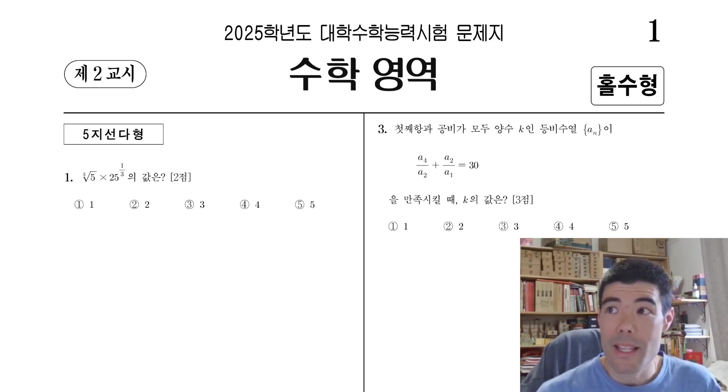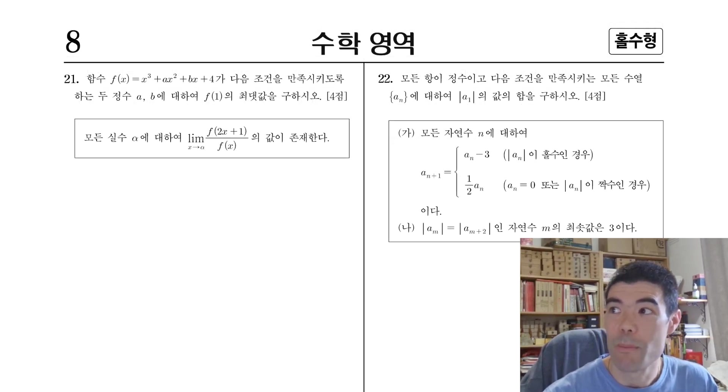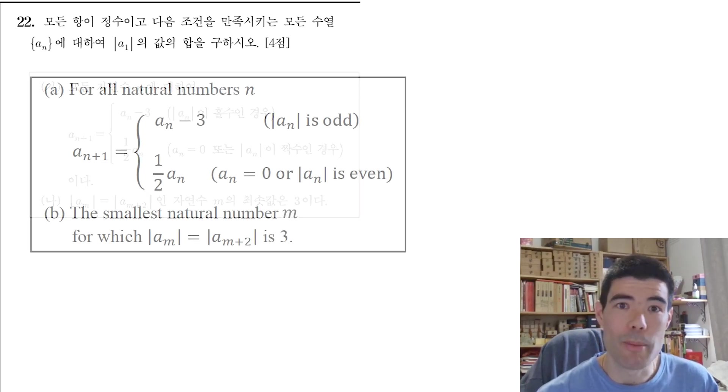This is the Korean high school math exam from 2025, so it's their equivalent of the SATs, but much, much harder. There are 30 problems in total, and we're going to look today at problem 22. The sequences problem caught my eye, especially once I translated it with the help of Google Gemini.